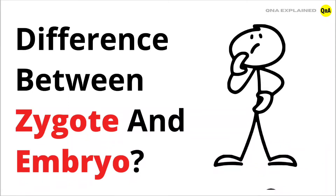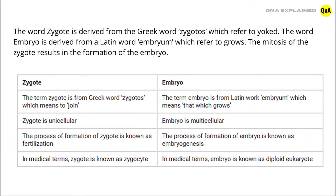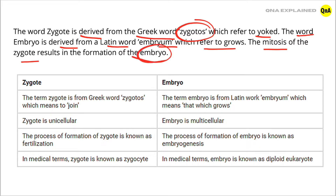Difference between Zygote and Embryo. The word Zygote is derived from the Greek word Zygotos, which refers to 'joined.' The word Embryo is derived from the Latin word Embryo, which refers to 'that which grows.' The mitosis of the Zygote results in the formation of the Embryo.